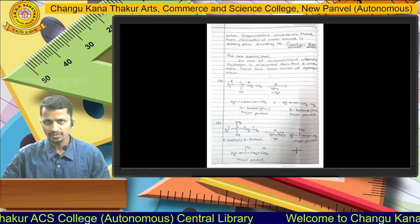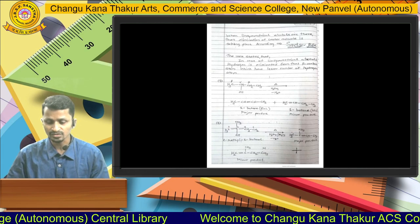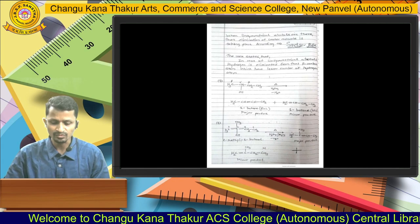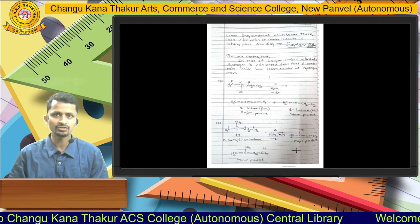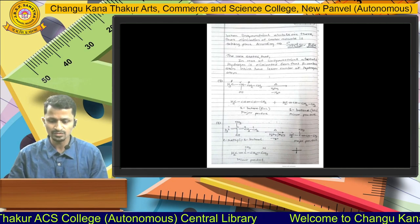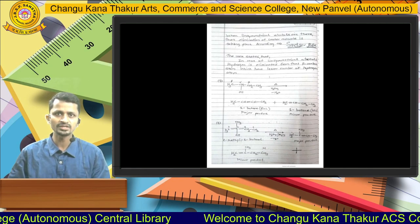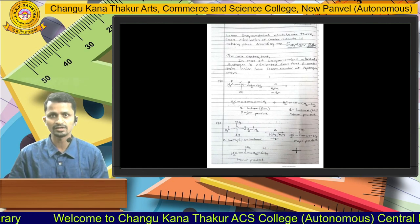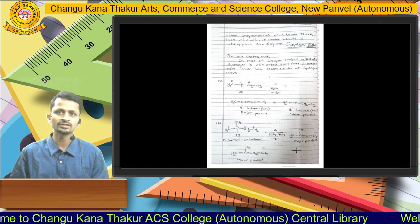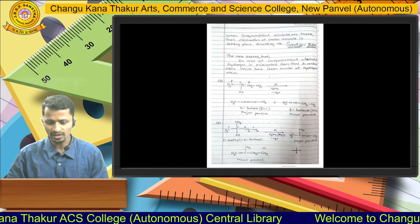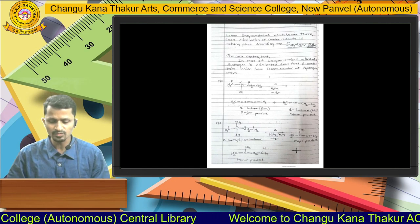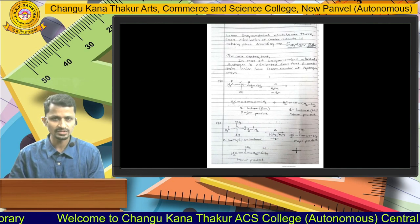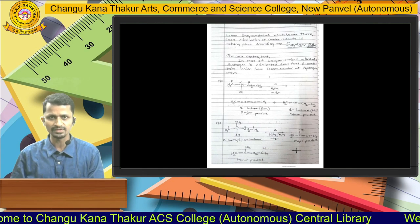All these examples are of symmetrical alcohols. When unsymmetrical alcohols are involved in dehydration, there is a question of which beta hydrogen should be removed. In the case of unsymmetrical alcohols, you have to follow the Saytzeff rule. The Saytzeff rule states that hydrogen is eliminated from that beta carbon atom which contains the fewer number of hydrogen atoms. For example, 2-butanol treated with concentrated sulfuric acid gives two products: 2-butene as the major product (80%) and 1-butene as the minor product (20%).